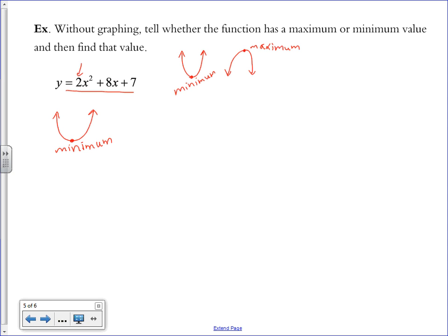And the minimum point is at the vertex. Now, since the question also wants us to find that value, we're going to have to figure out where the vertex lies. We know that the formula to find the x-coordinate of the vertex is negative b over 2a. This function, our B is 8, our A is positive 2. Negative 8 over 4 is negative 2.